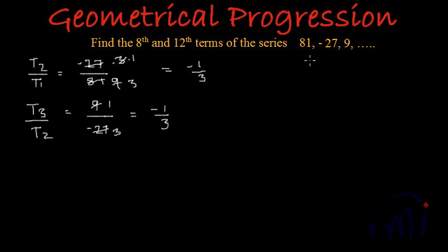Here we have got a first term as 81. So we have A, which we call the first term, equal to 81. And common ratio R is equal to minus 1 by 3. These are the basic parameters of this pattern. And what we have to find? We have to find the 8th and 12th term.